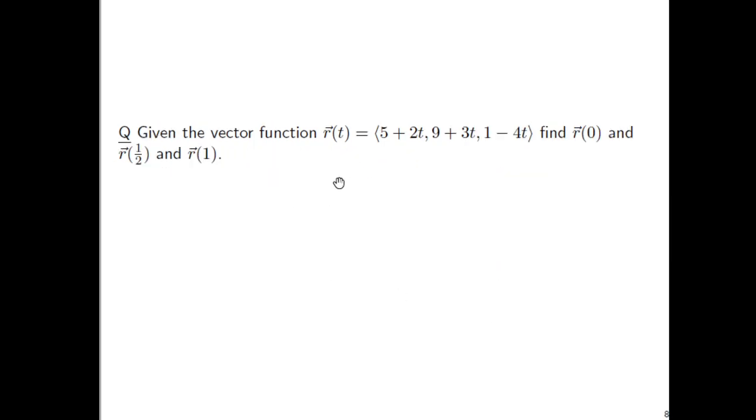Now, given the vector function r of t equals 5 plus 2t, 9 plus 3t, 1 minus 4t. Let's pause. The one difference now, we get a vector, but this is a 3D vector. This is still a vector function. Find r of 0, and find r of 1 half, and find r of 1.